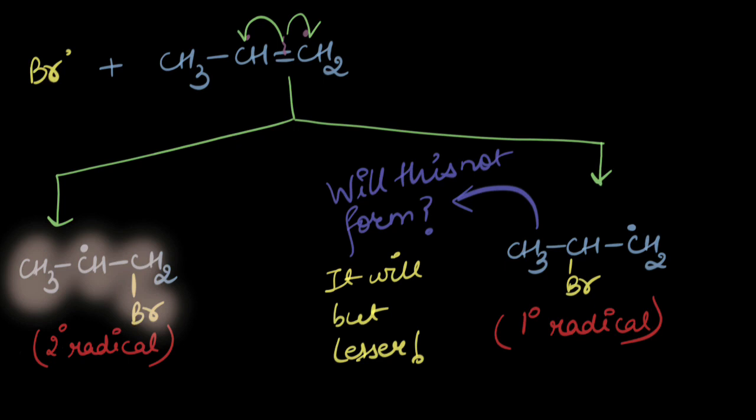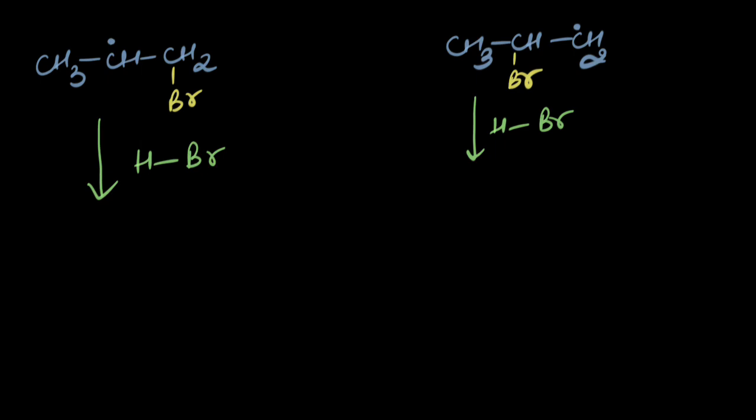So the two degree radical would give the major product while the one degree one would give the minor product. Let's proceed. So now these free radicals intend to form stable neutral species.